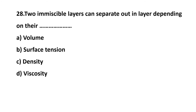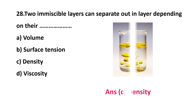Question 28: two immiscible layers can be separated depending on their — option A: volume, option B: surface tension, option C: density, option D: viscosity. The answer is option C: density. Based on the density of the substance, we can separate the layers of two immiscible substances.